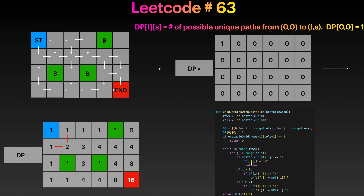In the code: if i is greater than zero, we check whether the cell in the previous row at the same column equals the obstacle marker. If it does, we don't add anything; otherwise we add that value. Similarly, if j is greater than zero and the cell to the left is not flagged, we update dp[i][j] accordingly. We keep doing this and return the last entry of our DP table.